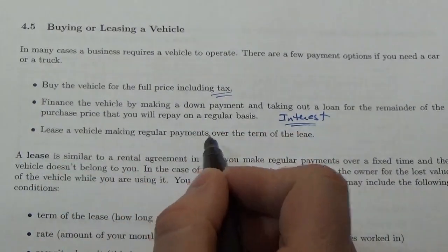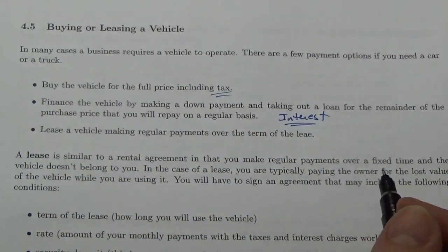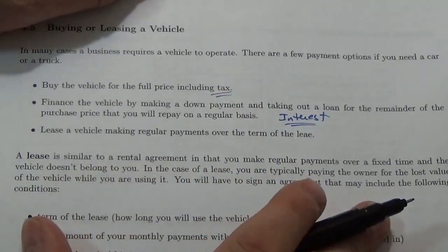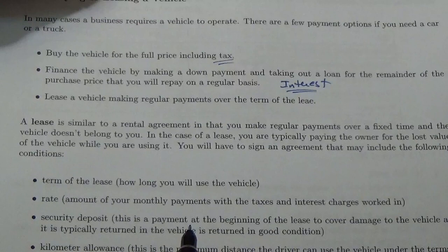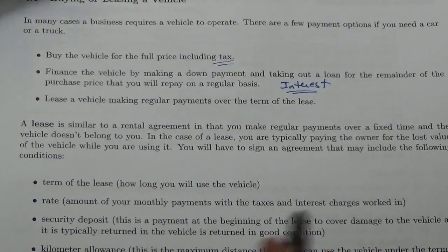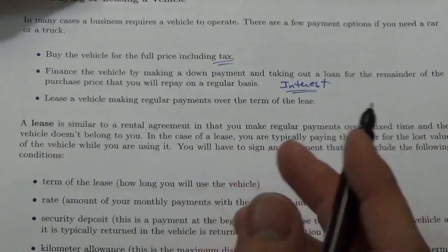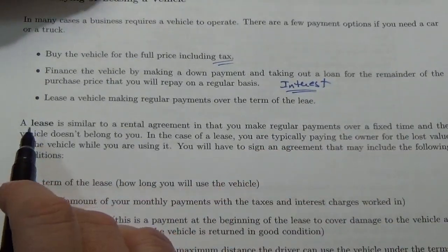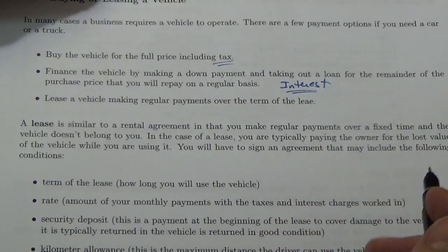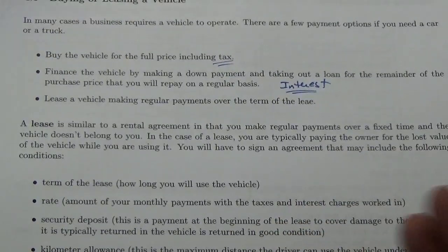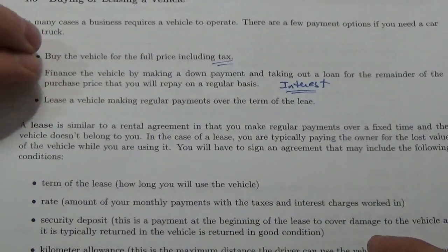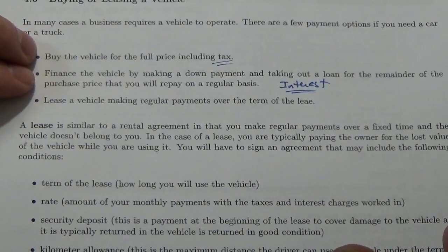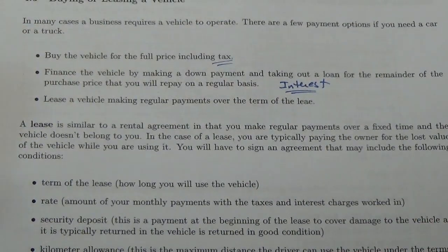Or you can lease a vehicle, making regular payments over the term of the lease. A lease is similar to a rental agreement in that you make regular payments over a fixed time, and the vehicle doesn't belong to you in the end. In the first two options — buying outright or financing — the vehicle ends up being yours. You own it, so whatever value it retains at the end is yours.